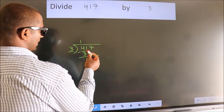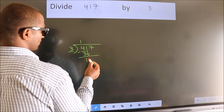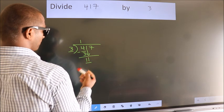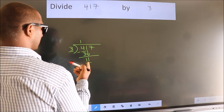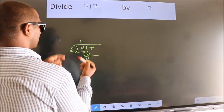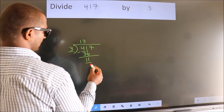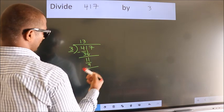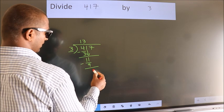After this bring down the beside number. So 1 down, so 11. A number close to 11 in 3 table is 3 3s 9. Now we subtract. We get 2.